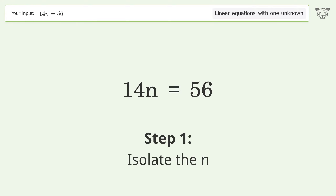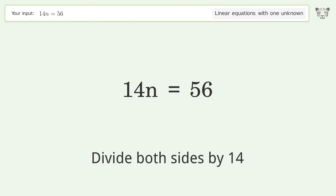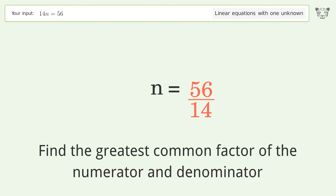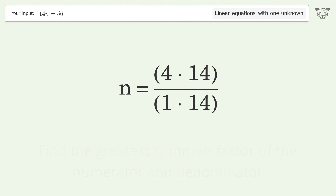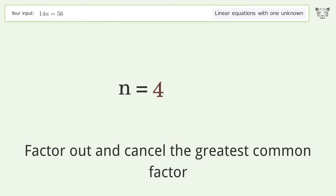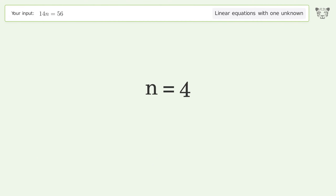To isolate n, divide both sides by 14. Then simplify the fraction by finding the greatest common factor of the numerator and denominator. Factor out and cancel the greatest common factor. And so the final result is n equals 4.